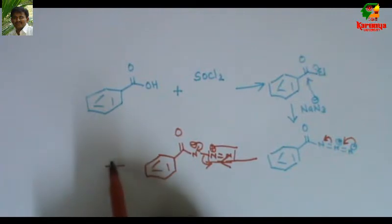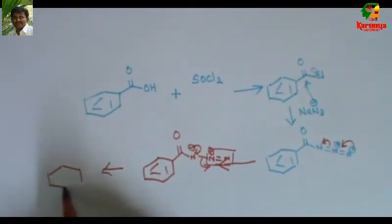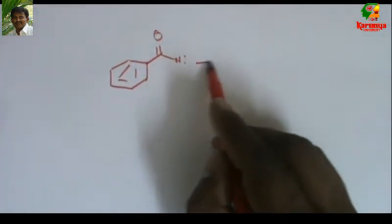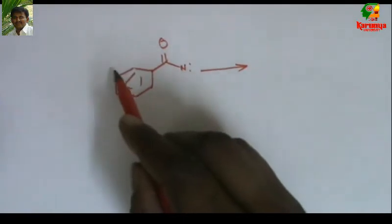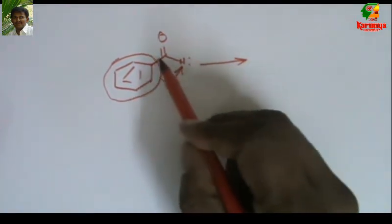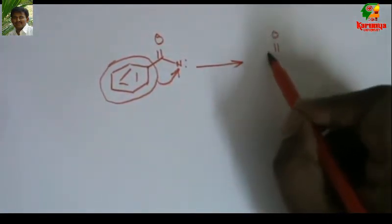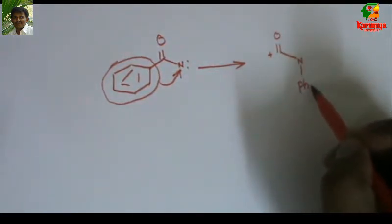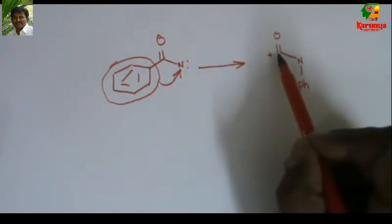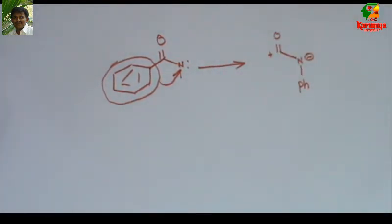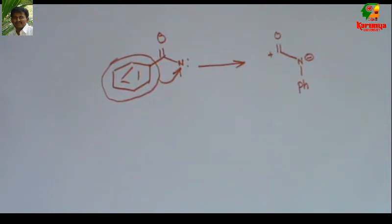So what we get is nitrene. This nitrene is an electron-deficient species. So this phenyl ring undergoes a 1,2-shift to carbon. After that, we get a positive charge on carbon and a minus charge on nitrogen. This is the specialty of nitrene and carbene.